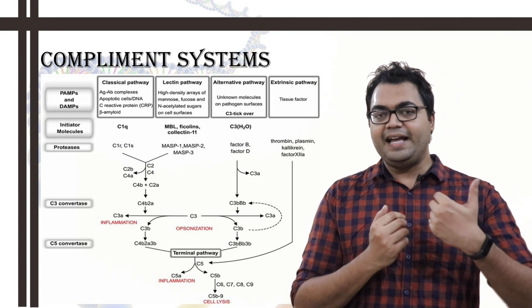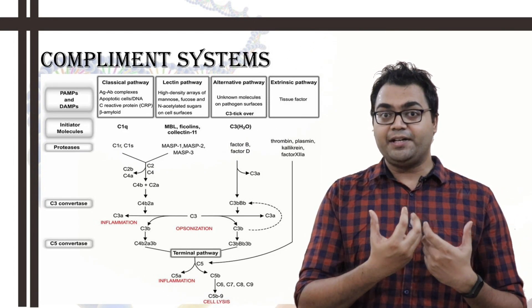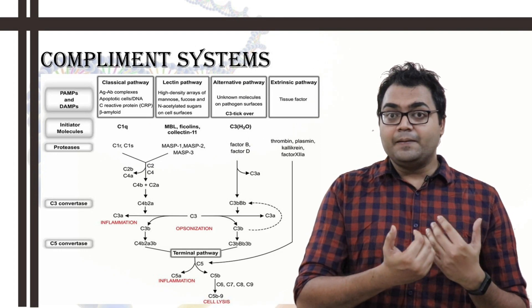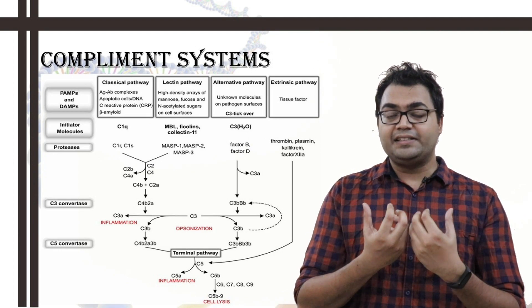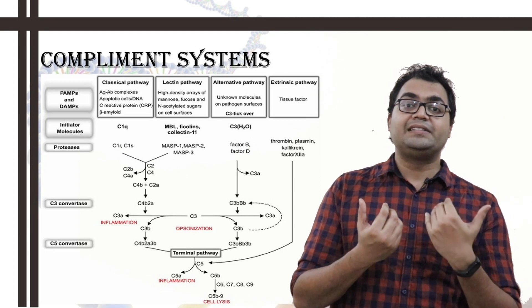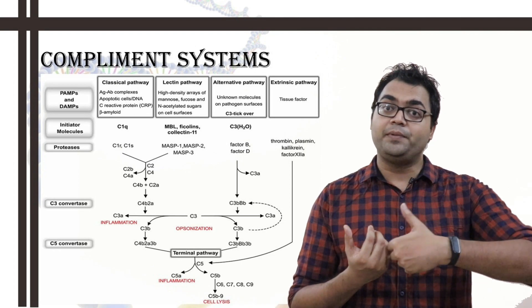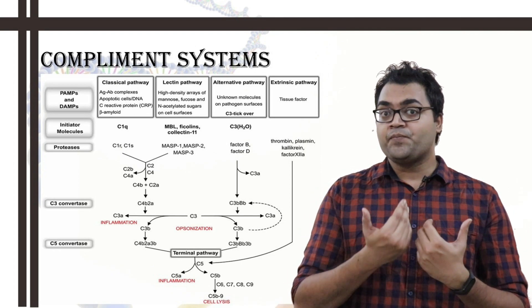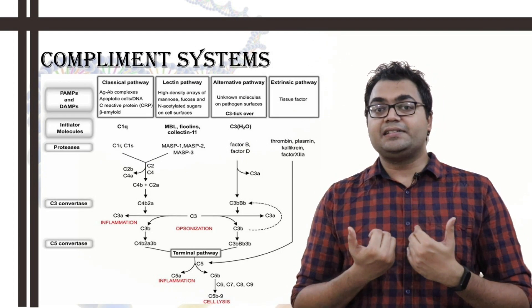After the activation of C1r, the first C1r then cleaves and activates the second C1r, and the first C1r also got activated by a cleavage. And then this C1r is a serine protease, activated serine protease. It has become activated from the zymogen state, which always needed to be activated in order to become active. So, it was a zymogen. Now, it activated C1s, and then that C1s activated the other C1s.